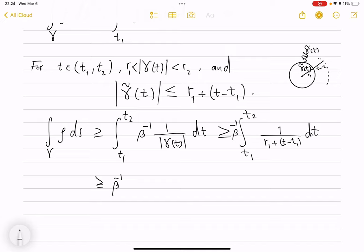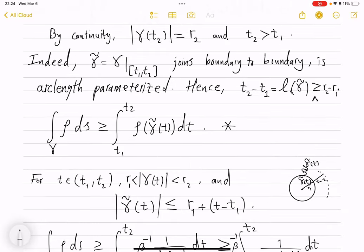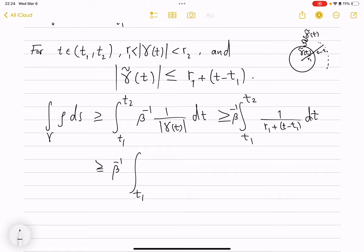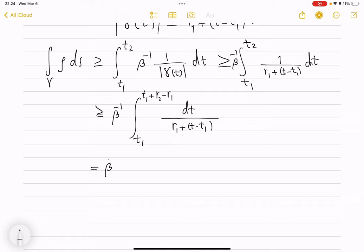t2 minus t1 we showed is at least r2. t2, wait, um, the gap between t1 and t2, here we showed, is at least r2 minus r1. So, this is from t1, t1 plus r2 minus r1. And then the rest is the same. r1 plus t minus t1. And now this is equal to, finally, beta inverse, take ln. So, this will be log. If you plug in the upper bound, t1 cancels t1, r1 cancels r1. You get r2 minus log r1. But this is actually equal to 1.